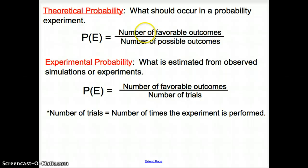Theoretical, now be careful, in theory, theoretical, what should occur in a probability experiment. So we have the number of favorable outcomes over the number of possible outcomes. Theoretical, think of flipping a coin. Flipping a coin should be 50-50, but is it always going to be 50-50? Probably not.